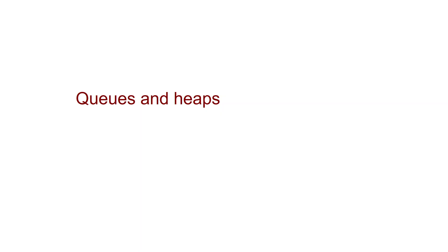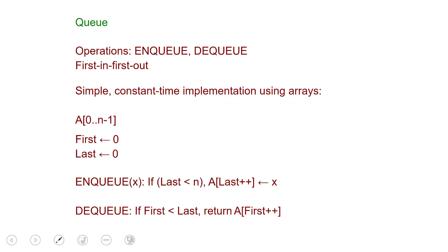In this lecture we are going to see queues and heaps. A queue is a familiar data structure that you actually interact with every time you join a line. The operations it supports are enqueue, or joining the line, and dequeue, which is getting out of the line. The queue represents first-in first-out order: the first person that joins the queue is the first person who gets out. There is a simple constant-time implementation using an array.